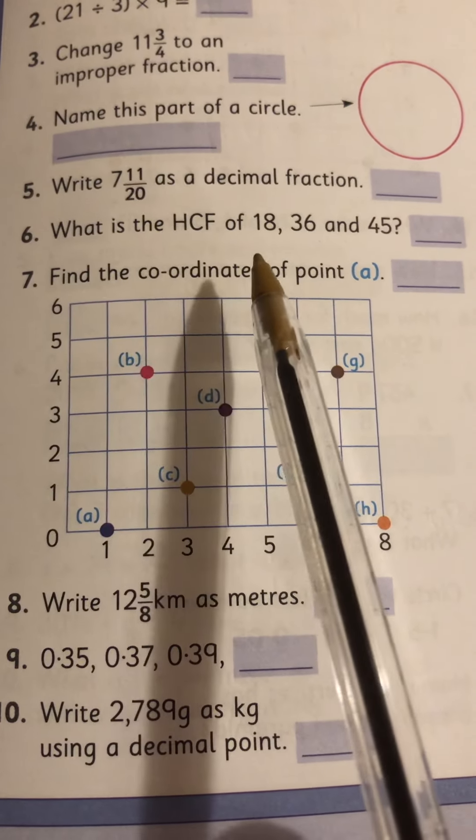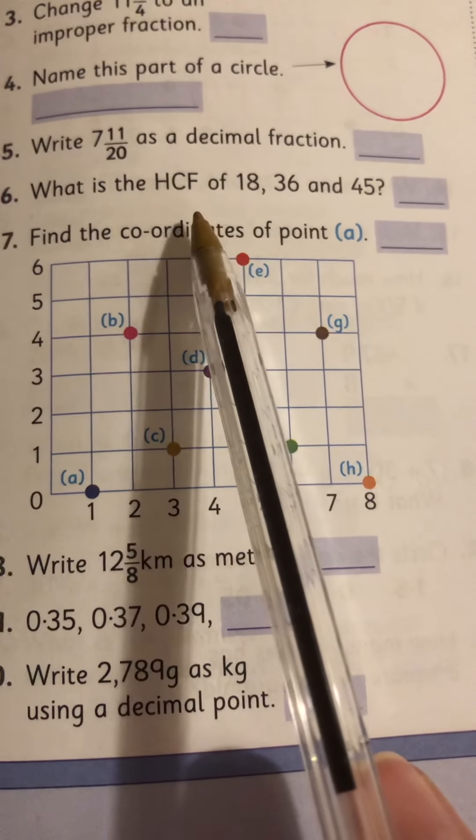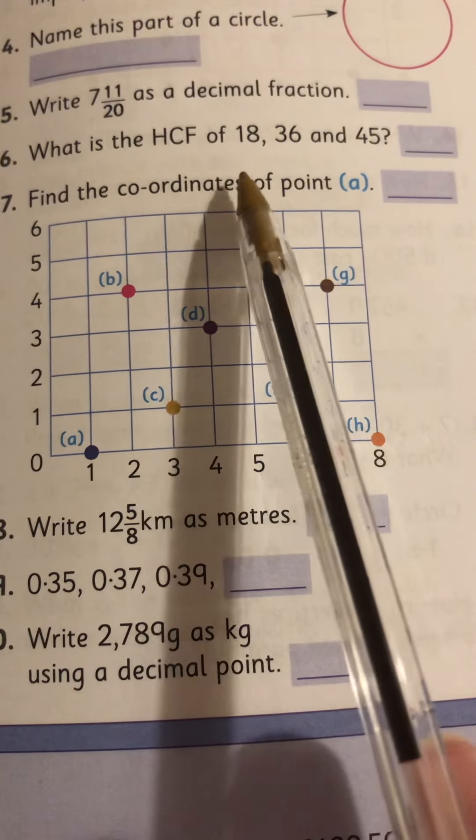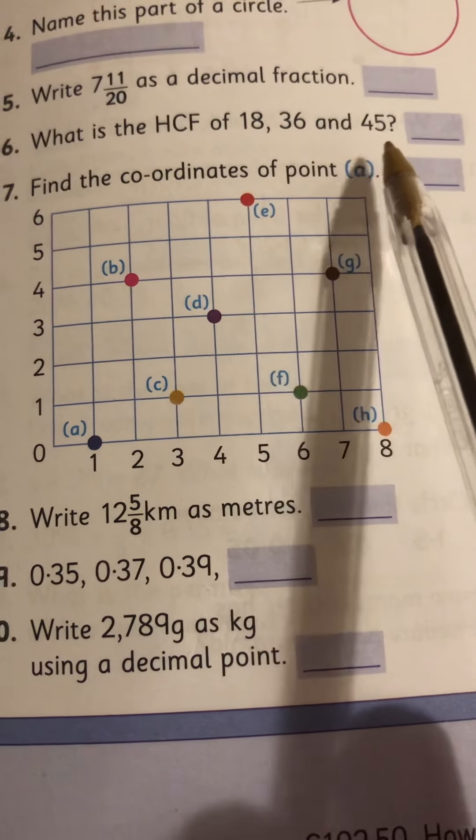Number 6, what is the HCF of 18, 36 and 45? So the highest common factor, you should be well used to these. So what's the highest number that goes into 18, 36 and 45?